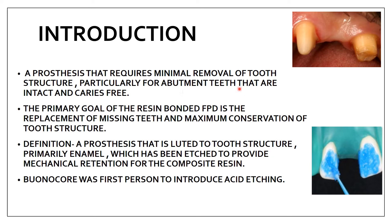If abutment teeth are intact and caries free, resin bonded fixed partial dentures require very minimum tooth preparation. The primary goal is replacement of missing teeth with maximum conservation of tooth structure. By definition, it is a prosthesis luted to tooth structure, primarily enamel, which has been etched to provide mechanical retention. Acid etching of the enamel creates micro tags, giving mechanical retention for the prosthesis. The first person to introduce acid etching was Bunocore.